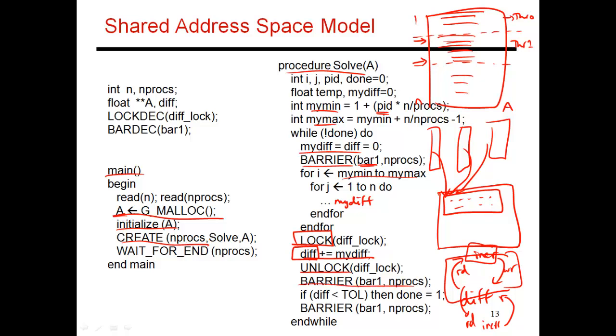I'm waiting for everybody else to also do this increment of the diff variable. After everyone has done it, now I can examine the value of diff. I can see if diff is less than the threshold. If it is, then I'm done, and everyone's going to see that I'm done, and they're all going to exit the loop. If not, then we continue to loop. There's another barrier over here, and then you finish up.